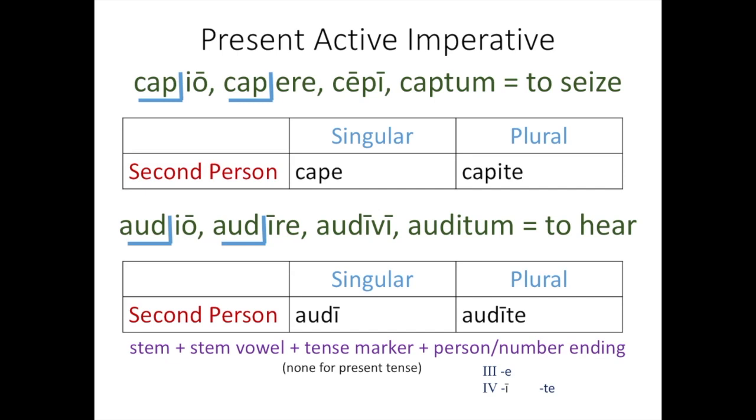For your singular imperatives for third IO and fourth conjugation, you just remove the RE. So cape and audi. For your plural, you use the equation: the stem plus stem vowel plus tense marker plus person and number endings. So you have your stem cape and then I, your stem vowel, and then TE is your plural imperative ending, just like it is for your other conjugations.